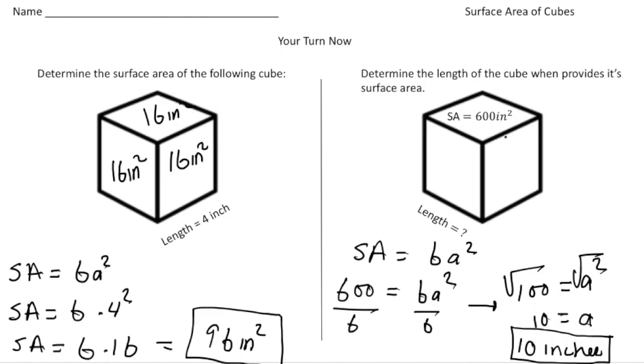Now this problem, I gave you the surface area and you had to find the length. So again, when you know the formula, plug it in and solve. So I plug in the 600 and I end up with an answer of 10 inches. Notice the label over here is inches squared and the label here is inches. So again, inches is just the length and inches squared is the surface area. How'd you do?